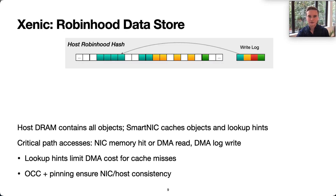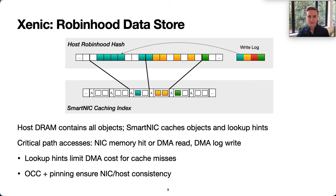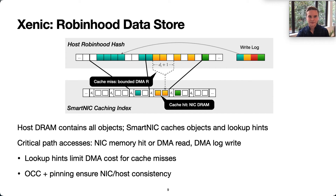ZNIC's data store consists of a closed Robin Hood hash table in host memory, containing all objects in the database shard. The Robin Hood design is a variant of linear probing that prioritizes placing objects near their initial hash positions — it steals from the rich to give to the poor. Objects with a high displacement are swapped during probing to achieve a more uniform distribution, keeping displacement low and with small variance. On the SmartNIC side, there is an index in the NIC's onboard memory that caches hot objects in NIC DRAM, allowing remote lookups without a PCIe access. For cache misses, the NIC stores lookup hints maintaining the highest known displacement for segments of the host table, and uses those hints to limit DMA size. Cache hits are served directly on the NIC, and misses are handled with a DMA utilizing the hints to minimize cost.